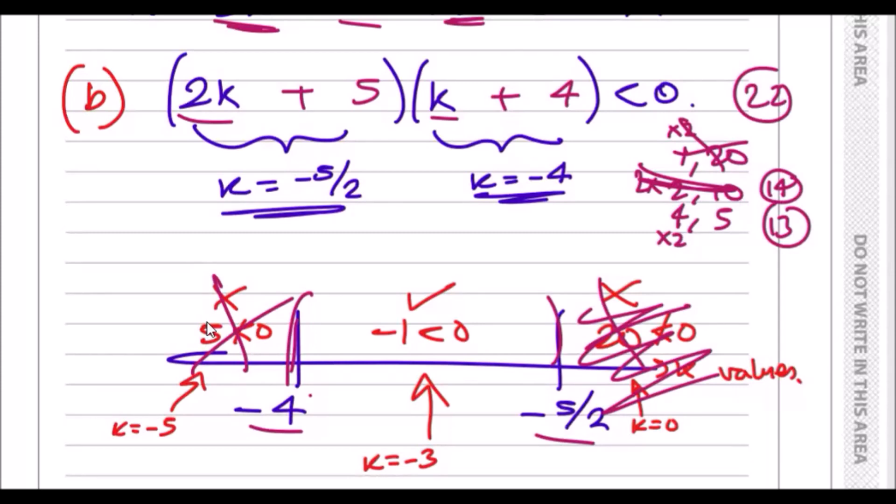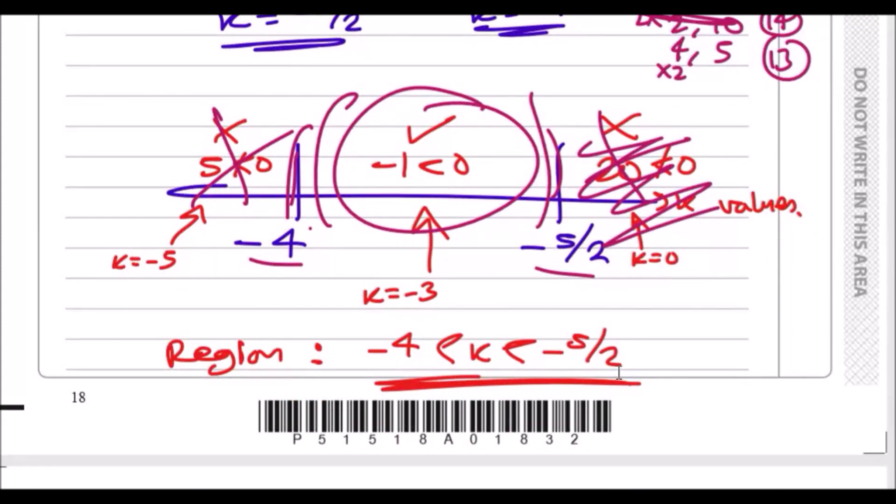When you put a value between -4 and -5/2, I chose -3. Then plug in -3 here and I got -1, and yes, -1 is less than 0, so this means this section is true. This means k must be between -4 and -5/2, and that's it done.